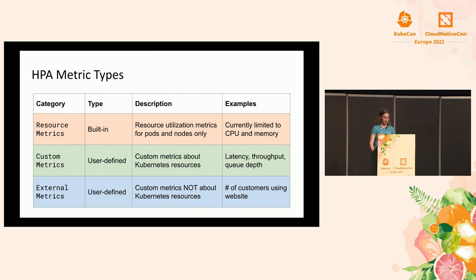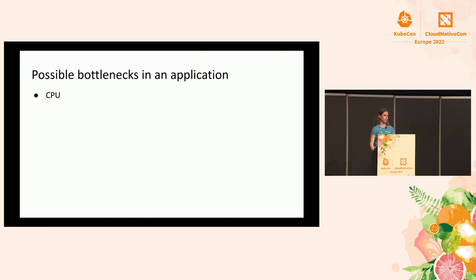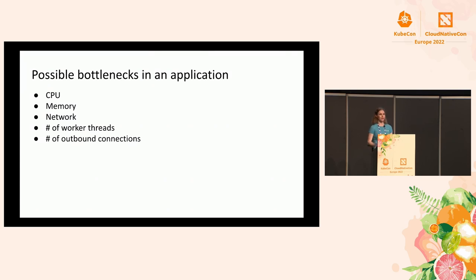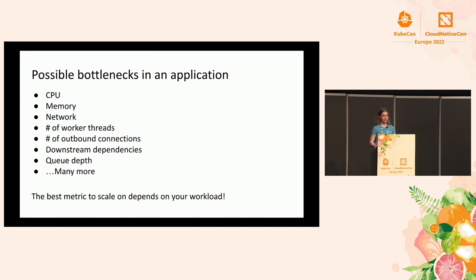Finally, there are external metrics — another user-defined option — but these don't associate with a particular Kubernetes resource. This might be a business metric like the number of people currently using your application. There are so many possible bottlenecks: CPU, memory, network, number of worker threads, GPU usage, number of outbound connections. Your deployment might not even be the bottleneck — there might be a downstream dependency. It would be pointless to scale on CPU when the workload isn't CPU-bound. The best metric depends on your workload, and it's really important to characterize your workload before choosing a metric to autoscale on.